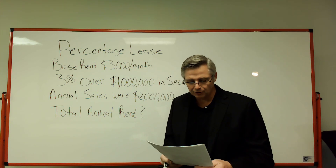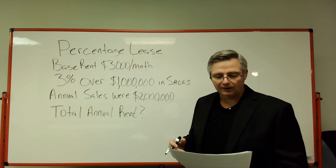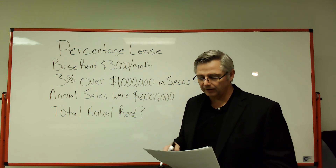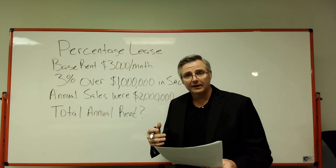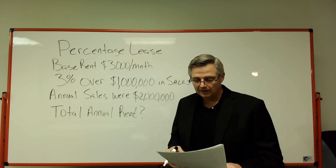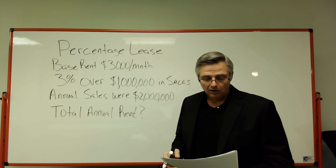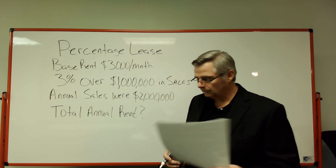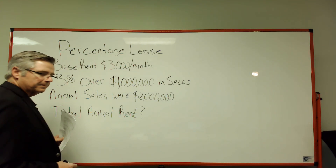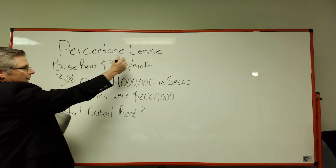Question number six says: the business owner negotiates a percentage lease for his business. His base monthly rent is three thousand dollars per month. When annual gross sales exceed one million dollars per year, he agrees to pay an extra three percent of all annual gross sales over this amount. His annual sales were two million dollars this year. What is the total annual rent?